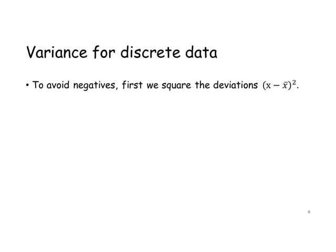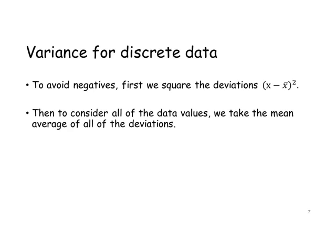To avoid negatives, first we square the deviations: x minus x-bar, all squared. Then, to consider all of the data values, we take the mean average of all of the deviations.